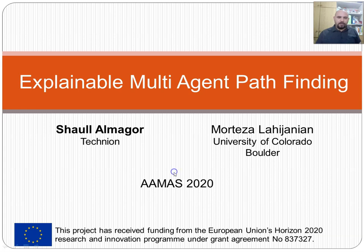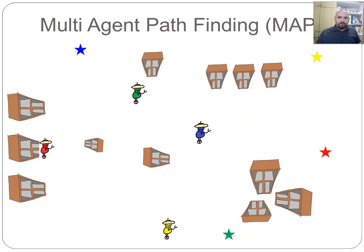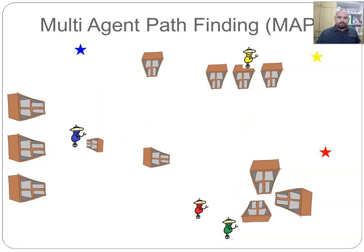In multi-agent pathfinding, we are given a set of agents—in this case some warehouse robots, the green, red, yellow, and blue robots—in some environment, in this case the warehouse, and each agent has a target. Our goal in multi-agent pathfinding is to find a plan for the agents such that when each agent follows their plan, they get to their target, and if they execute their plan simultaneously, the agents don't collide. We can run these agents with some planner and find a plan for them, and they run about and reach their targets.